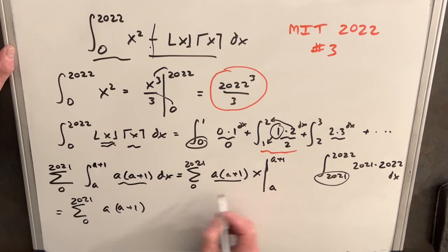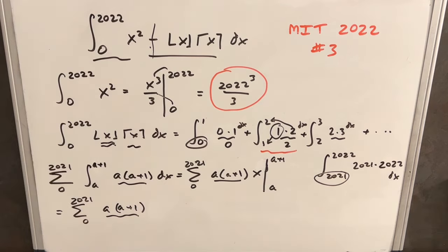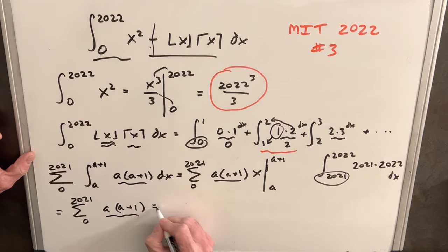That needs to be evaluated from A plus 1 to A. When we evaluate this, we can take this piece out and write it in front. We're evaluating from A plus 1 minus A. That's going to cancel, and this whole thing is just 1. So we're just dealing with this series for A times A plus 1.